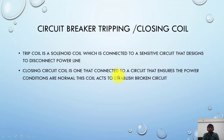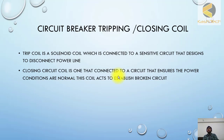Circuit breaker tripping or closing coil — what it is and how you can visualize it when you are studying the drawing. The tripping coil is a solenoid coil connected to a sensitive circuit that is designed to disconnect power. The closing coil is one that is connected to a circuit that ensures power conditions are normal; this coil acts to establish a broken circuit.